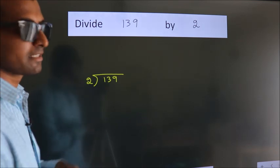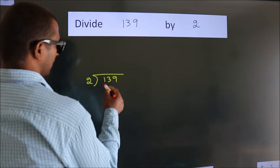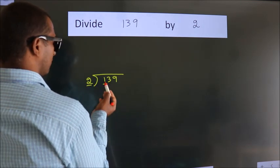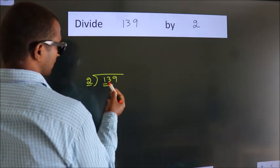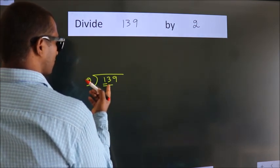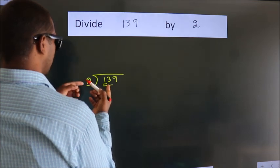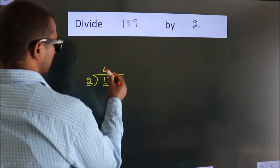Next. Here we have 1, here 2. 1 smaller than 2. So we should take 2 numbers, 13. A number close to 13 in 2 table is 2, 6, 12.